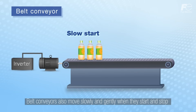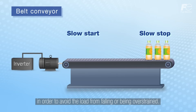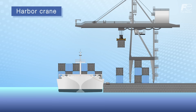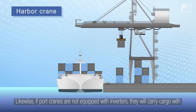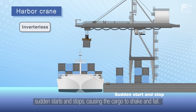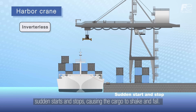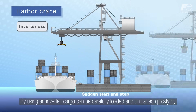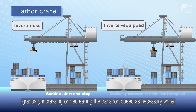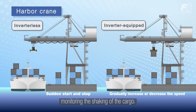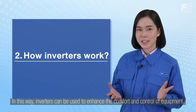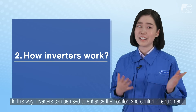Belt conveyors also move slowly and gently when they start and stop in order to avoid the load from falling or being overstrained. Likewise, if port cranes are not equipped with inverters, they will carry cargo with sudden starts and stops causing the cargo to shake and fall. By using an inverter, cargo can be carefully loaded and unloaded quickly by gradually increasing or decreasing the transport speed as necessary while monitoring the shaking of the cargo. In this way inverters can be used to enhance the comfort and control of equipment.